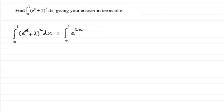We do twice the product of the terms. The product is 2e to the x, so if we double that we get 4e to the power x. And then we square the last term, so that's going to be 2 squared which is 4, and we're integrating all of this with respect to x.